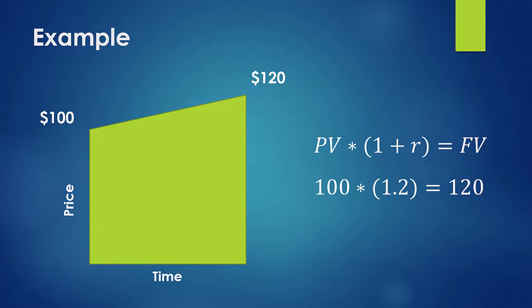Let's say you're looking at an investment opportunity with a future cash flow of $120. You assess the riskiness of this at around 20 percent. How much are you willing to pay for this investment? We use the present value formula: $120 at 20% risk, discounted back, equals $100 today — because $100 times 1.2 equals $120. So you'd be willing to pay $100, you go to the marketplace, and you buy this investment.